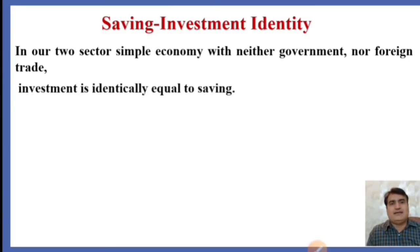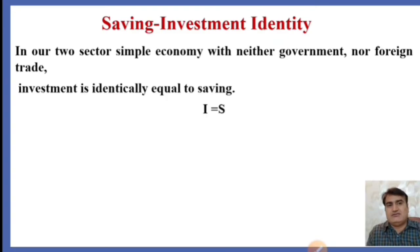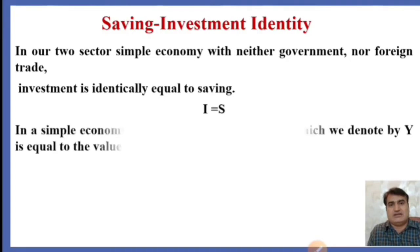In two-sector simple economy with neither government nor foreign trade, investment is identically equal to savings. Here, I stands for investment and S stands for savings, so I = S means investments are equal to savings.